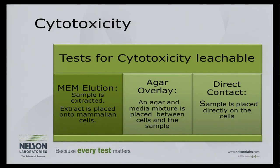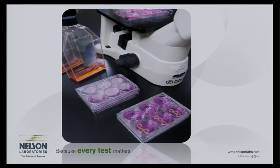For cytotoxicity, the MEM elution is the historic, easiest, and quickest test we run. The cytotoxicity test uses L929 cells — mouse fibroblast cells. These are the most common cells used because we have the most history with them and can compare scores sample to sample. You might consider a clinically relevant cell line, like ocular or neural cells, but L929 is preferred because of the extensive knowledge base. We grow cells in flasks where they adhere, then break them apart and seed them in six-well plates.